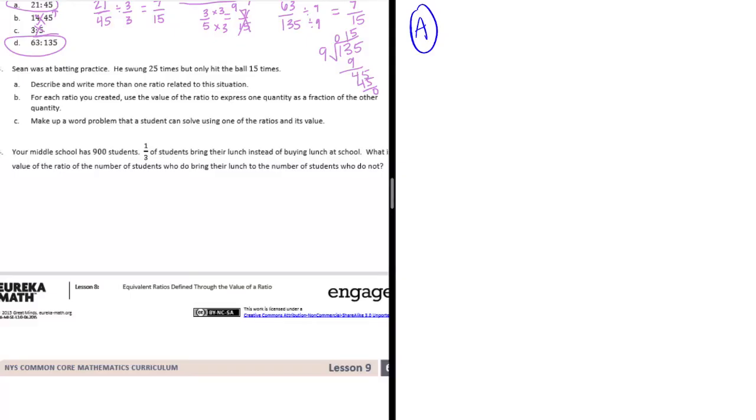Let's say the ratio of the number of times, I'll just start with the order that it's in. The number of times he swung to the number of times he hit the ball. So number of times he swings to hits, swings to hits is 25 to 15.